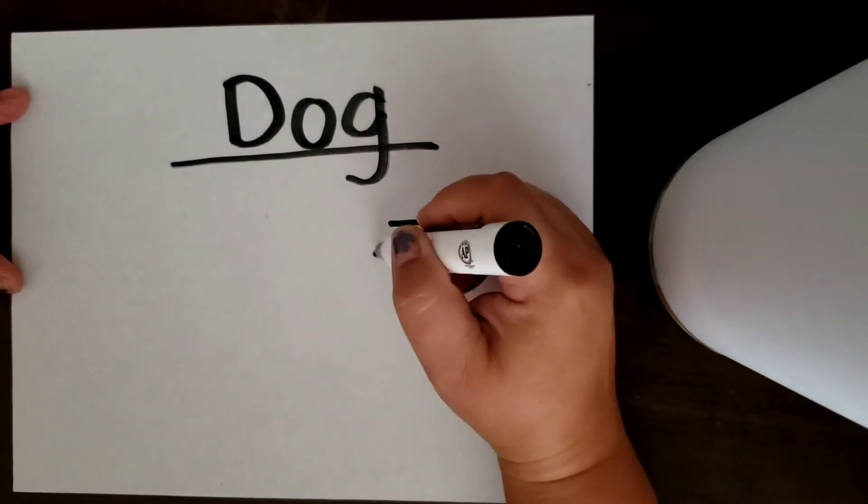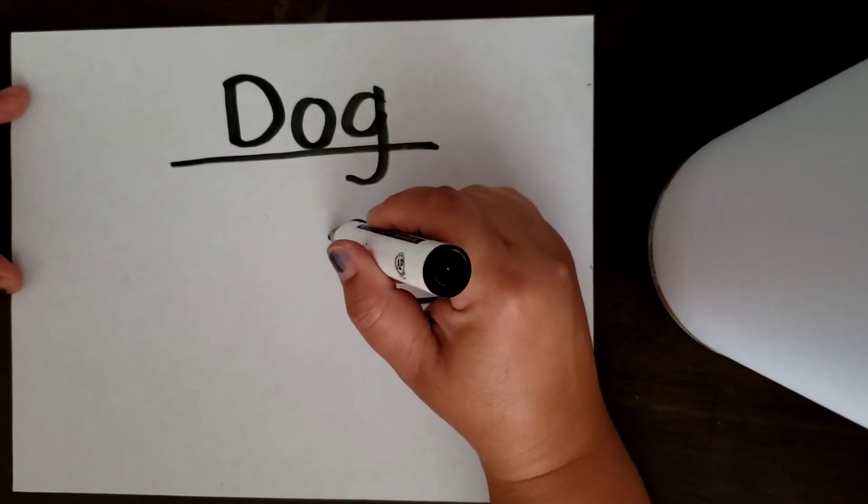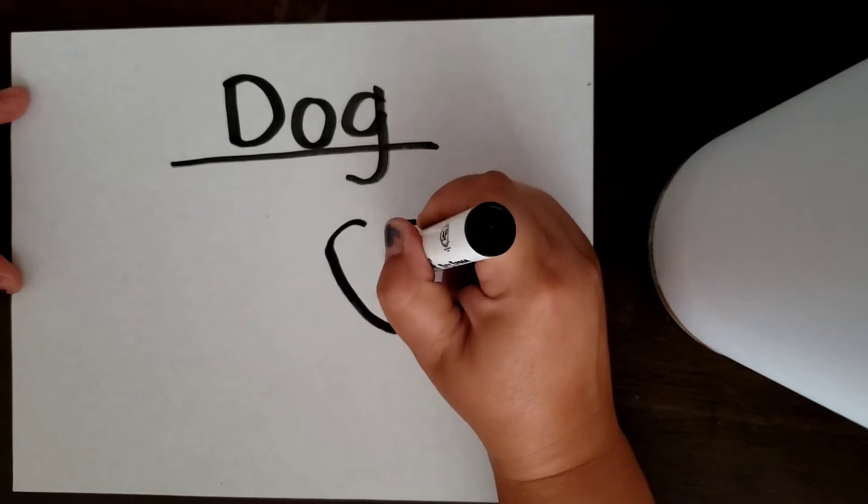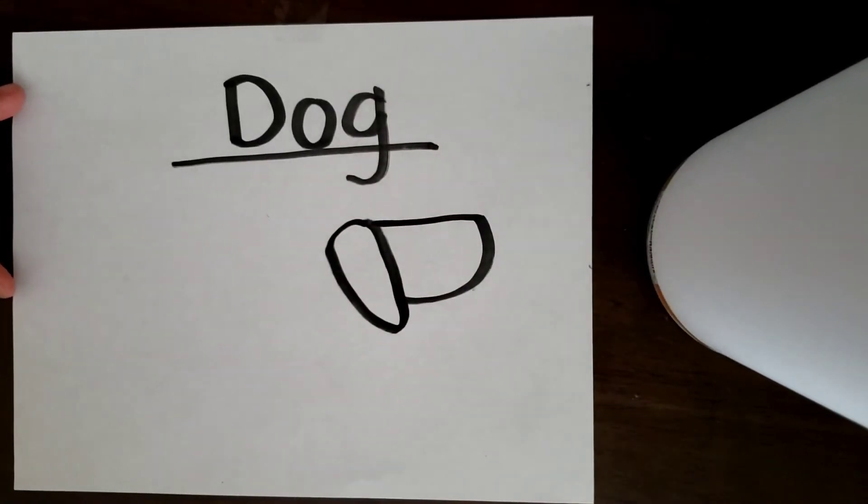Then for his ear we're going to go a little sideways and make a long ear going down. And then if it doesn't touch, just go ahead and bring the face out like that.